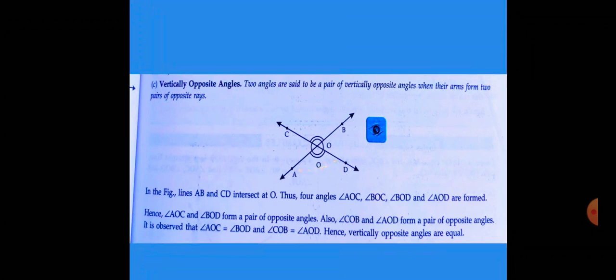Hence vertically opposite angles are equal. Angle AOC is equal to angle BOD, and angle COB is equal to angle AOD.